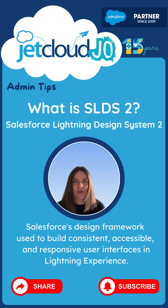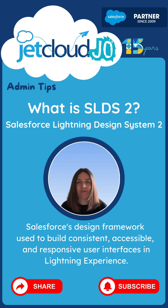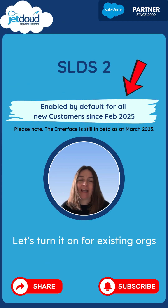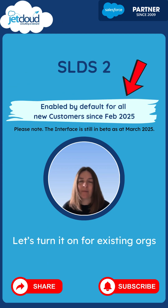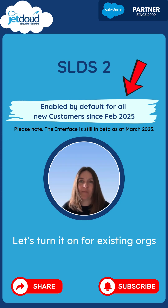So what is SLDS2? It's the Salesforce Lightning Design System version 2, basically the user interface and how you see things in the Salesforce environment. I'm going to show you quickly how to enable it if you're an existing customer. If you've become a customer of Salesforce since February 2025, you will automatically have this new interface enabled in your org.